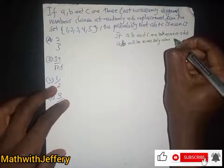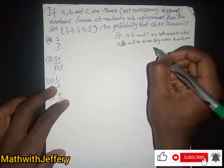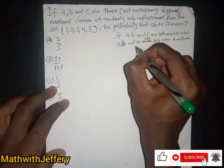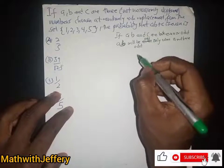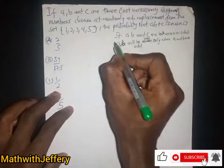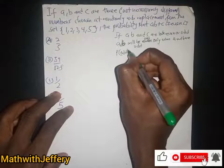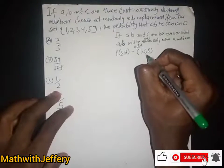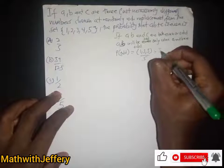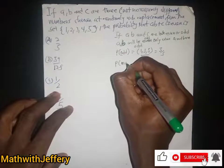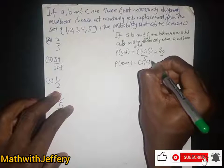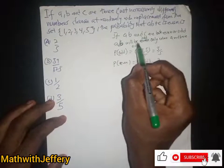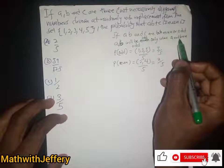Let's identify the odd and even values. The odd values in the set are 1, 3, and 5, so the probability of getting an odd value is 3 over 5. The even values are 2 and 4, so the probability of getting an even value is 2 over 5.